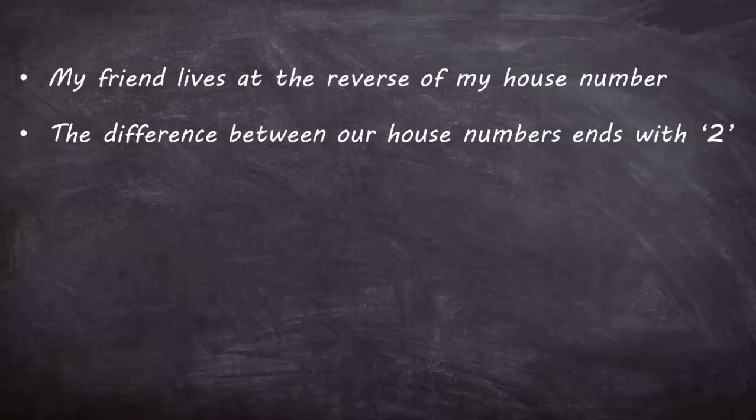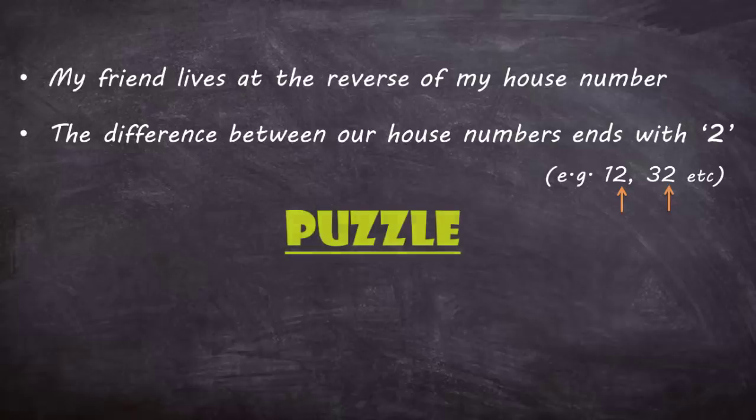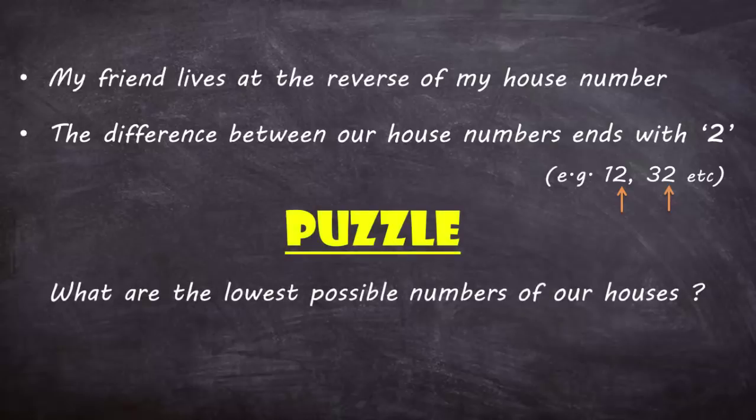That means the unit's place of the result is 2. What are the lowest possible numbers of our houses? The challenge is to solve it in your mind in less than just 2 minutes. Pause the video and think logically.